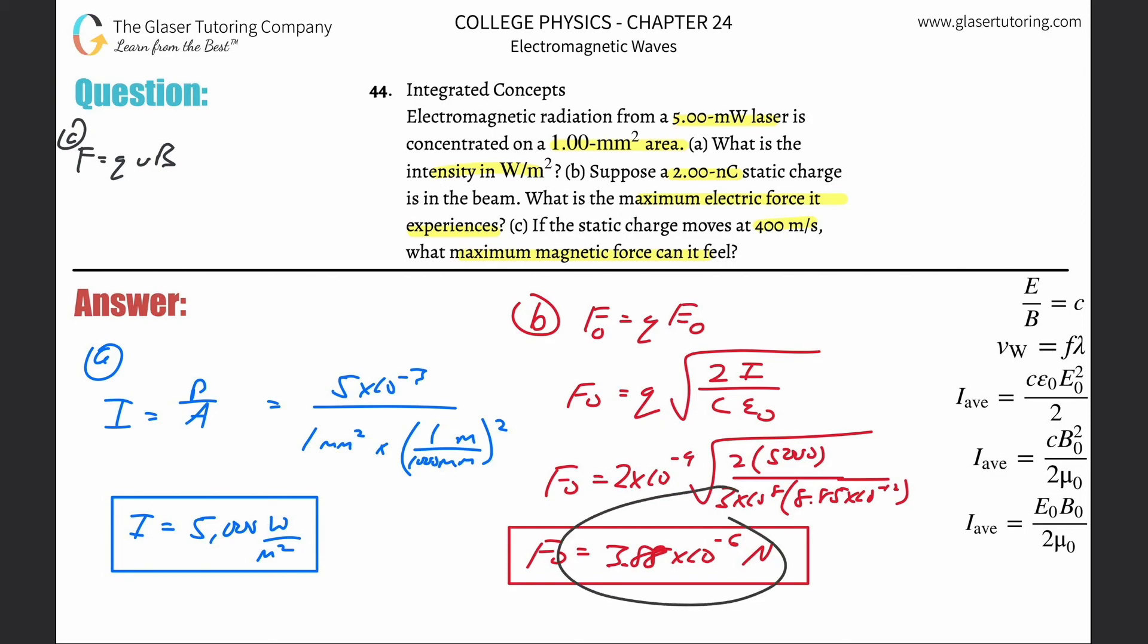The force here is magnetic force. That's what we're solving for. The charge here is again 2 nanocoulombs, so that's 2 times 10 to the minus 9th. The velocity they gave us is 400 meters per second, and now the B. B is over here.